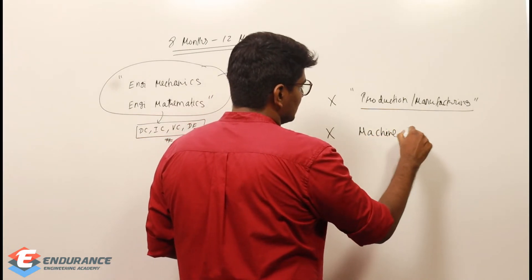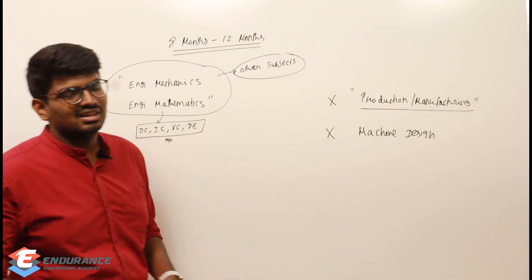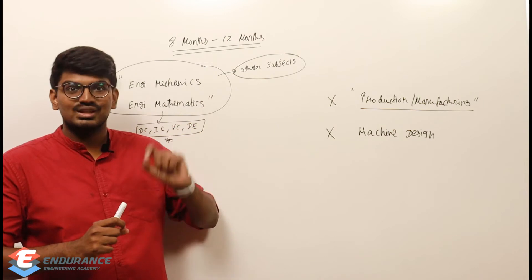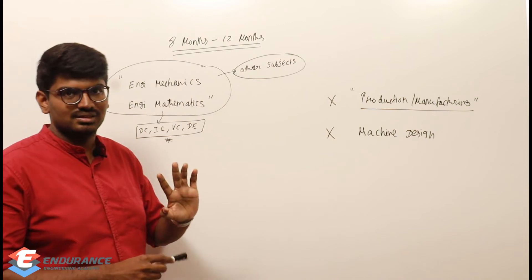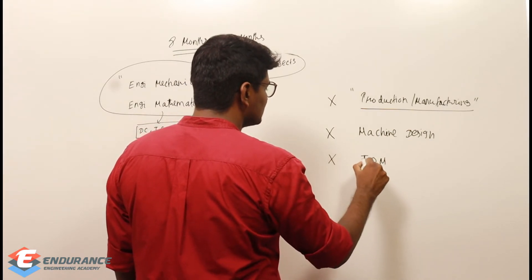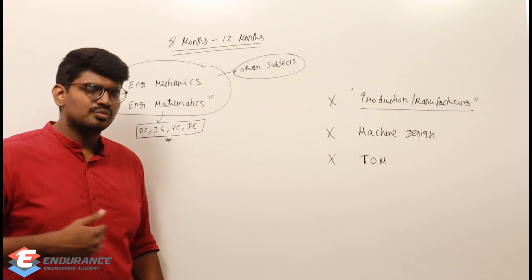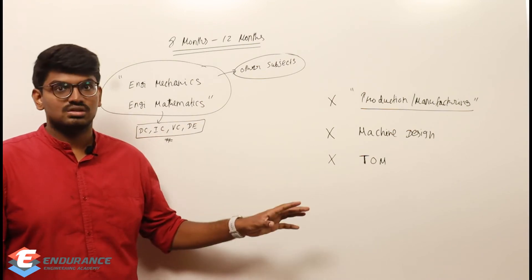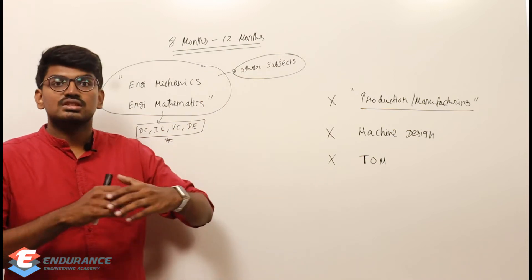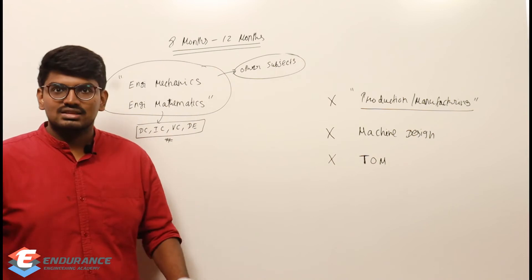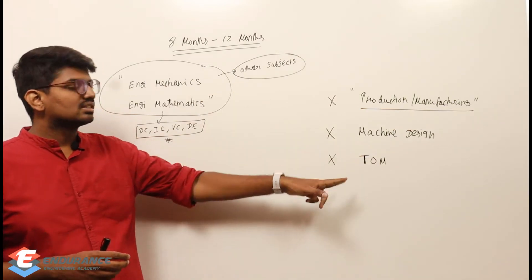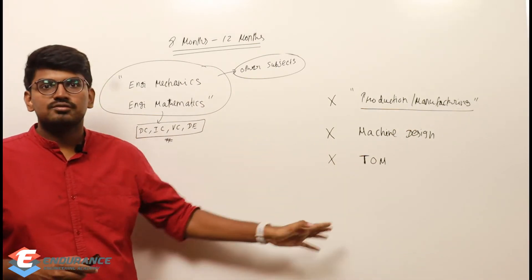Machine Design is another subject you should never start at the beginning — it is an out-and-out continuation of Strength of Materials. Without Strength of Materials, you cannot study Machine Design. Similarly, Theory of Machines is not ideal to start first because understanding velocity analysis, oscillation analysis, and the first two chapters properly requires Engineering Mechanics — specifically Euler's method and Newton's method — for a good flow.